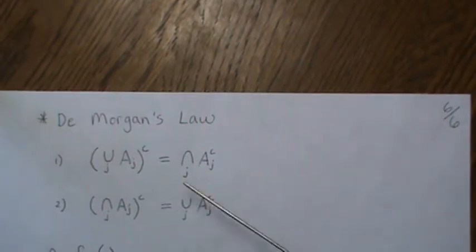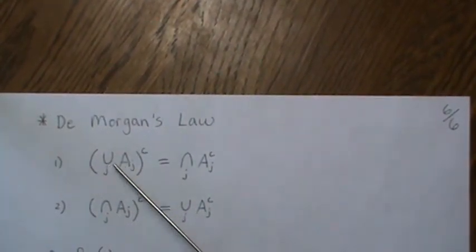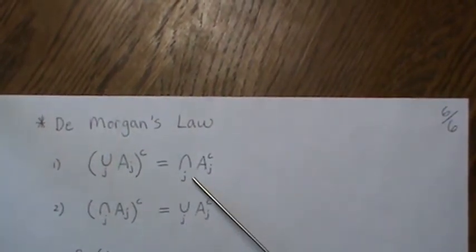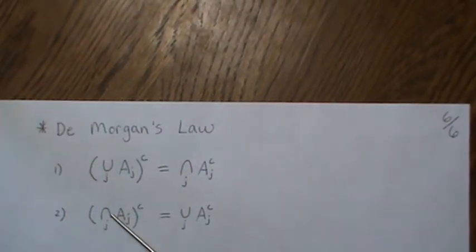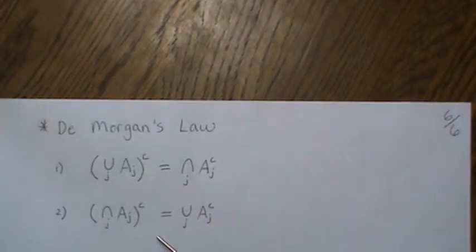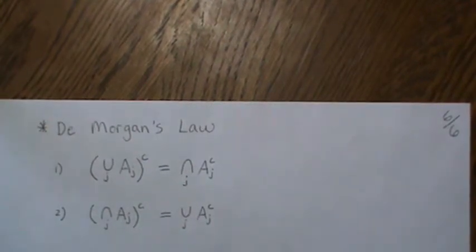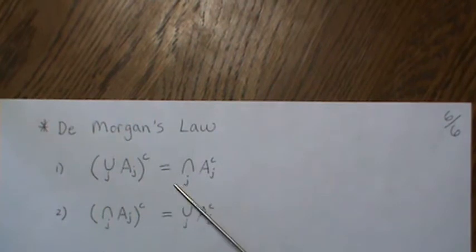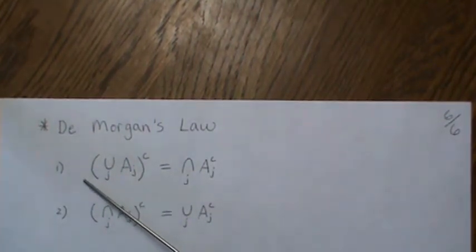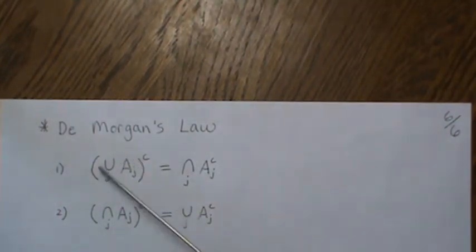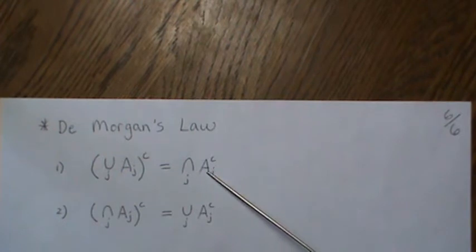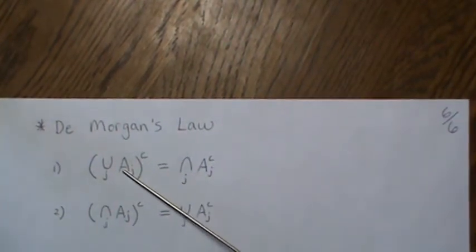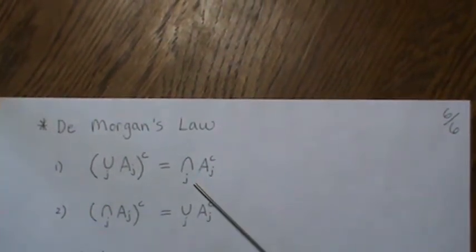DeMorgan's Law — this is what we're going to prove to get into that mindset of proving things. The complement of a union, whether finite or infinite, is the intersection of the A_ij complements. And this goes the other way: the complement of an intersection of sets is the same as the union of the complements. To prove this, you show that if there is an element in the left side, it must be an element of the right side, then go the other way — that means they're subsets of each other, which means they're equal.